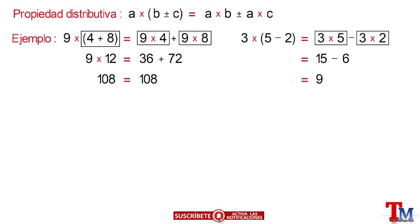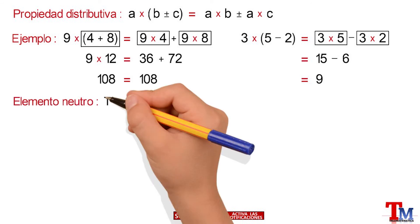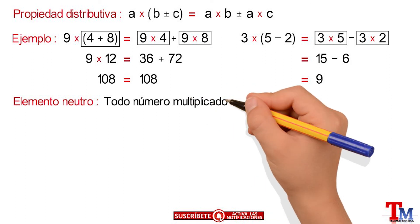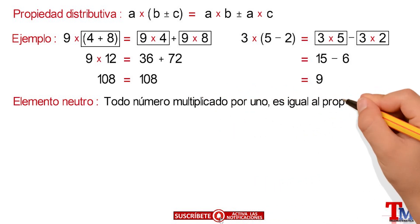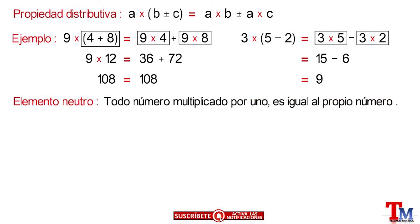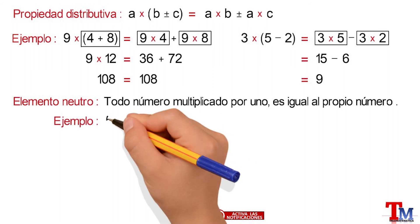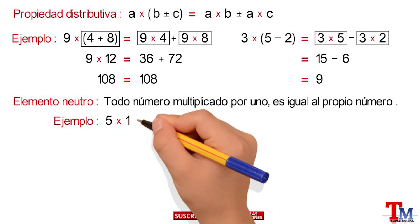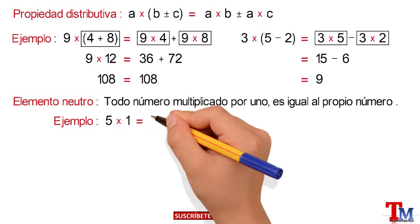Property number 4 is the neutral element, which is defined as: every number multiplied by 1 is equal to the same number. For example, 5 multiplied by 1 is equal to 5.